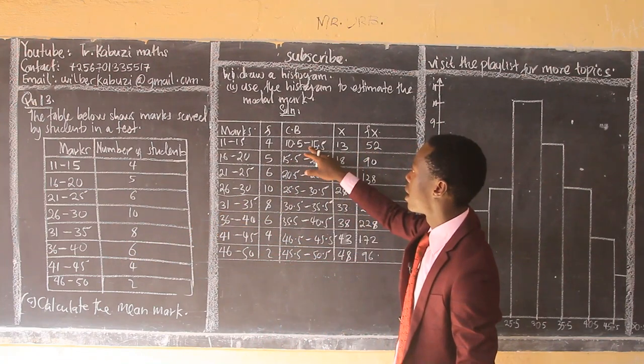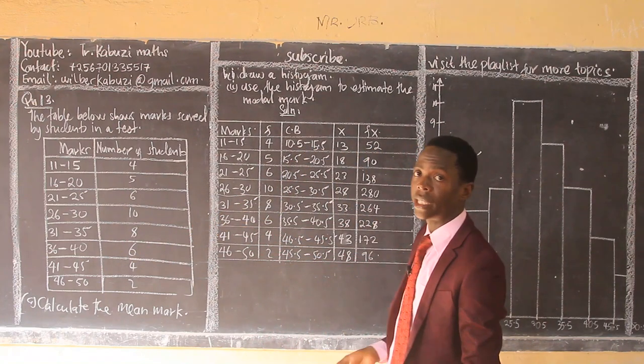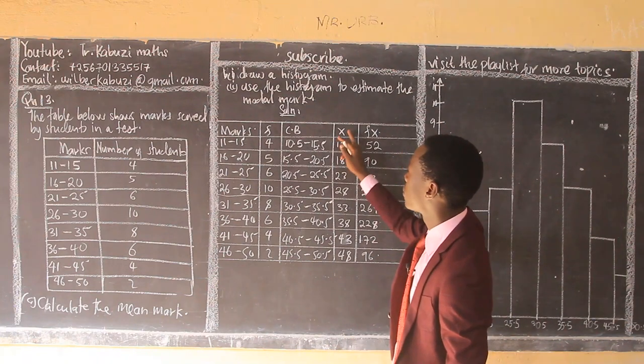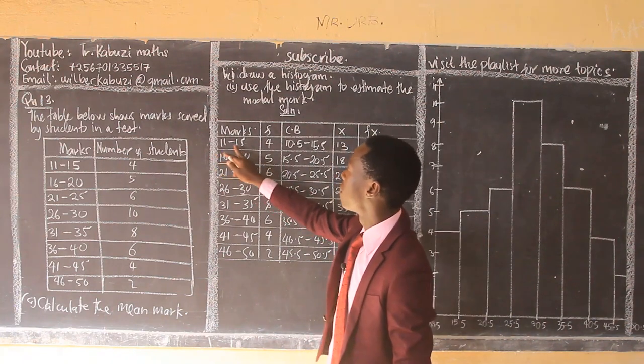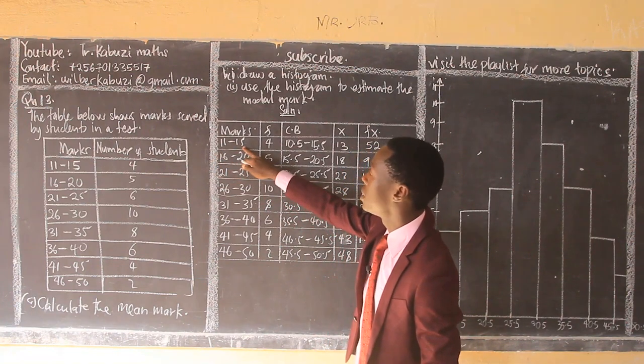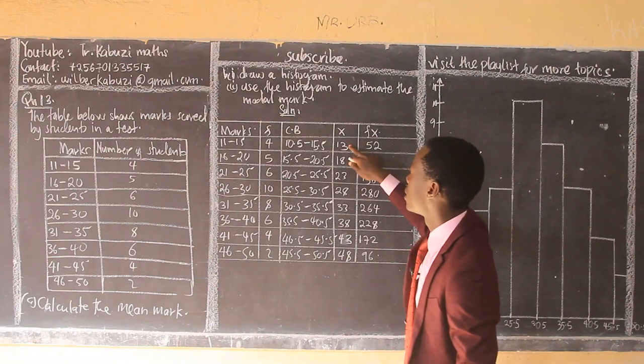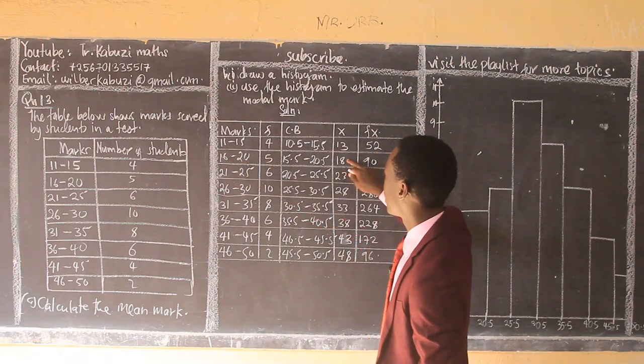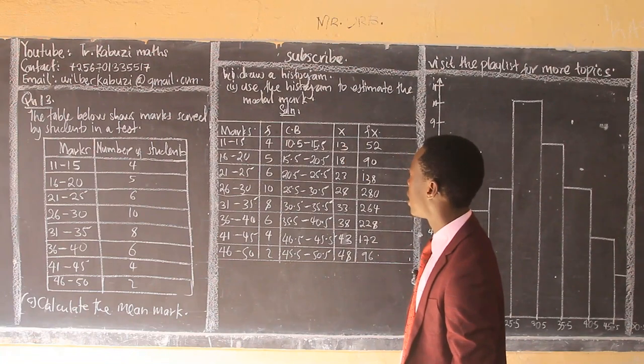So that's how I generate the class boundaries. Then I need also to get x because I need to get the mean. So my x, what we do, we get this plus this divided by 2. Add 11 plus 15 divided by 2. You get this plus this divided by 2. So that's what we are doing to get the x there.